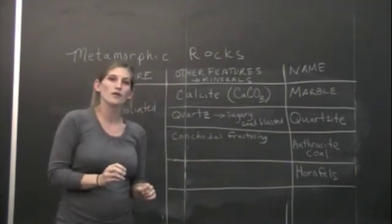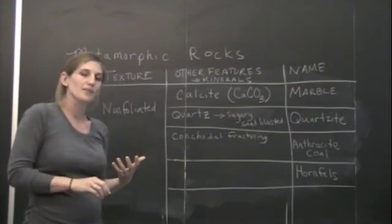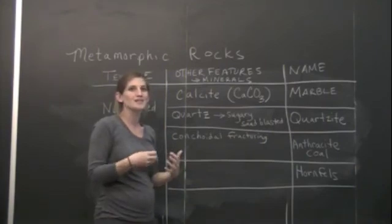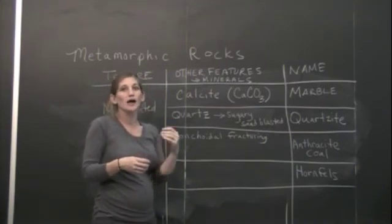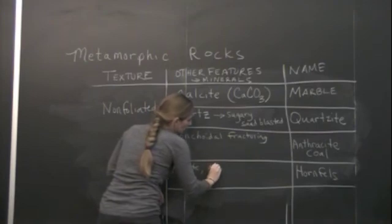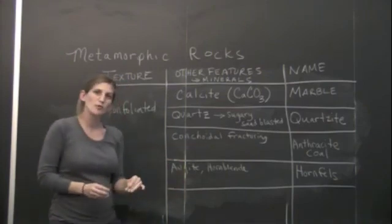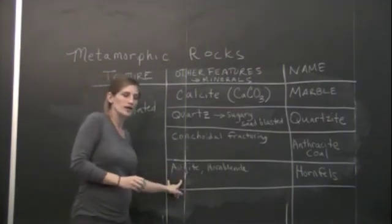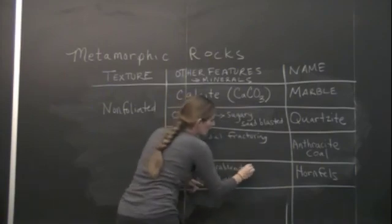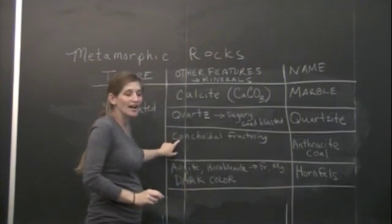Another non-foliated metamorphic rock that you might encounter is hornfels. Hornfels is going to be very dark in color. It can sometimes be a light purple or pink color. And it's created by taking basalt, so something that has a lot of minerals that are heavy in iron and magnesium. So think about things with augite in them, maybe something that has some hornblende. And we're going to start to metamorphose it. Hornfels tend to be pretty fine grain. We very rarely see the individual grains, but they are going to be dark in color because of the high iron and magnesium. And unlike anthracite coal, which can be shiny, it's not going to have that conchoidal fracturing.